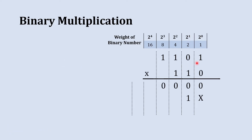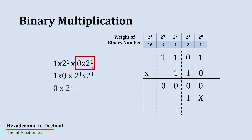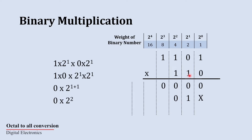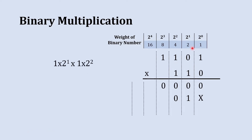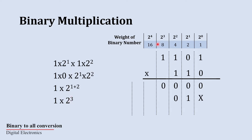We have multiplied this 1 with the first digit; now it's time for the next digit. We are going to multiply this 1 with this 0. This 1 has a weight of 2^1 and this 0 has a weight of 2^1; their product is 0 and the product of their weights is 2^2, which is the 4's place. So that 0 should be placed at the 4's place. Now we multiply this 1 with this 1: the 1 has weight 2^1 and the other 1 has weight 2^2, giving a result of 1 at 2^3, which is the 8's place.